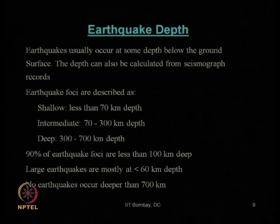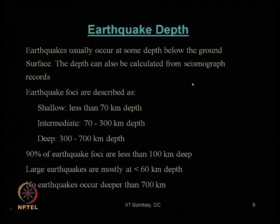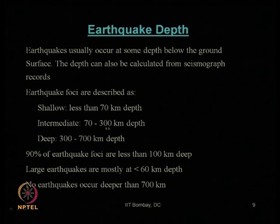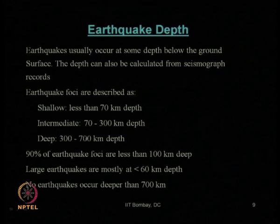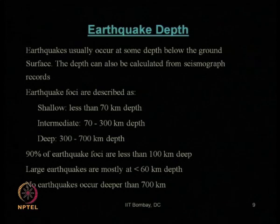We have also discussed the depth of an earthquake. With respect to depth, earthquakes can be categorized into three major categories: shallow earthquake when depth is less than 70 kilometers, intermediate earthquake when depth is 70 to 300 kilometers, and deep earthquake when depth is 300 to 700 kilometers from the ground surface. About 90 percent of major earthquakes are shallow, which is quite obvious because closer to the ground surface, the more devastating the effects.